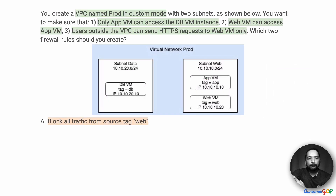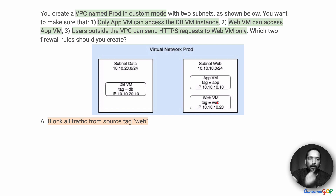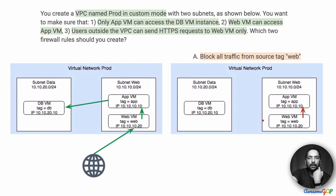Let's look at option A. Option A says block all traffic from source tag web. So all the web VMs have a tag called web, and we are essentially requiring that all traffic from this VM should be blocked. That clearly doesn't work for us because we need traffic to flow from the WebVM to the AppVM, whereas option A suggests blocking that. Therefore option A is definitely not useful for us.